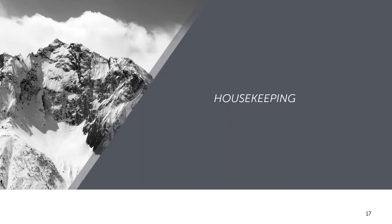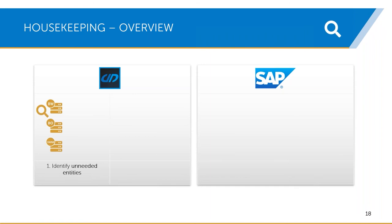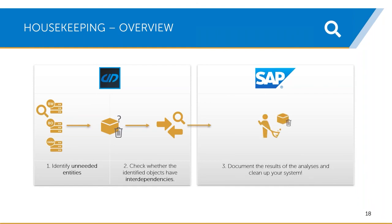Let's talk about housekeeping for a while. Over time, SAP systems tend to get messy in terms of redundant and unused objects. This can have a negative impact on performance and storage of your system. There is occasionally the need to clean up the system, and from our customers we know that this is a quite time-consuming and annoying task — and if you don't have the proper tools, it's even more time-consuming. DocuPerformer supports you in these tasks by providing analysis functions which help you to determine redundant and useless objects — identifying unneeded entities, checking if they are used anywhere, and deciding if you want to remove them or use the results for documentation purposes.